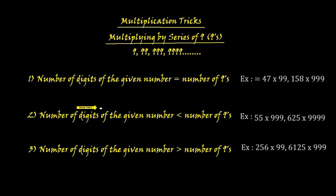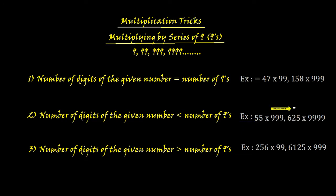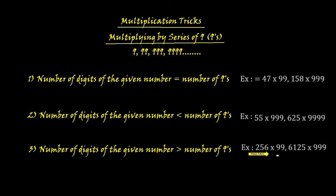Case two: number of digits of the given number is less than the number of nines. Examples: 55 times triple nine — two digits, three nines — and 625 times nine-nine-nine-nine — three digits, four nines. Case three: number of digits of the given number is greater than the number of nines. Example: 256 times 99 — three digits, two nines — and 6125 times triple nine — four digits, three nines.